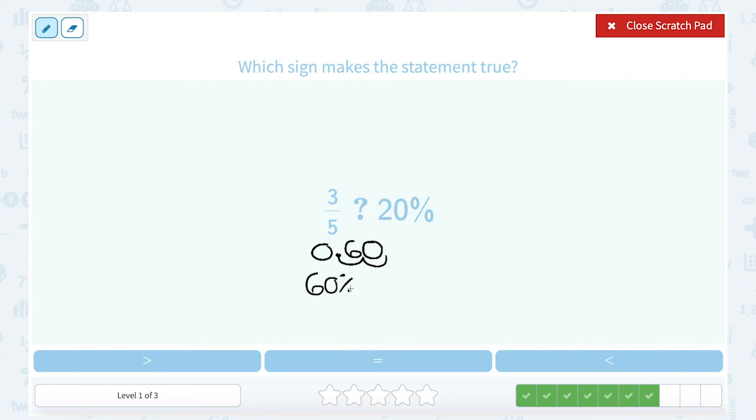So now it's going to be a little easier to compare 60% to 20% since they're now both written as percentages. Well, 60% is more than half. 20% is much less than half. So 60% is bigger or greater than 20%.